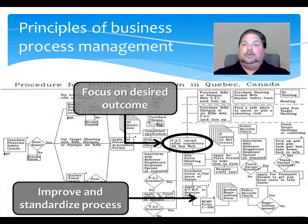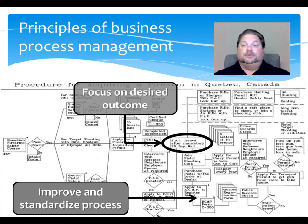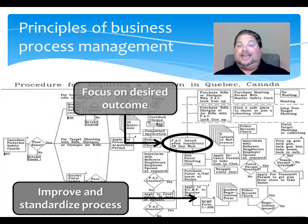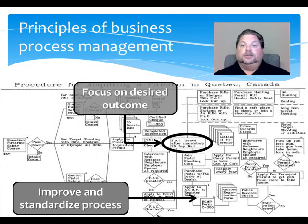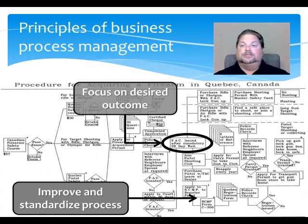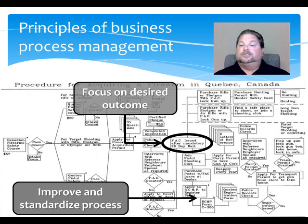Successfully employing BPM usually involves a number of different steps. First, there's organizing around outcomes — issuing a firearm certificate in the case shown on this slide — not tasks, to ensure the proper focus is maintained. Correcting and proving processes before potentially automating them, otherwise all you've done is make the mess run faster. Establishing processes and assigning ownership, lest the work and improvements simply drift away. Standardizing processes across the enterprise so they can be more readily understood and managed, errors reduced, and risks mitigated.